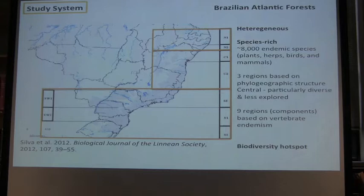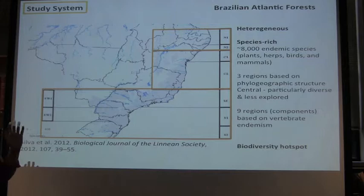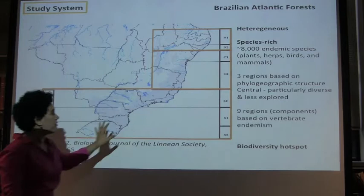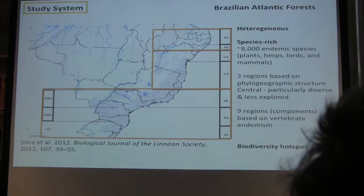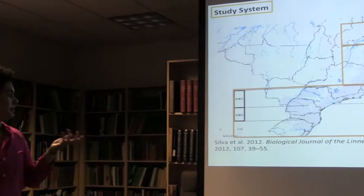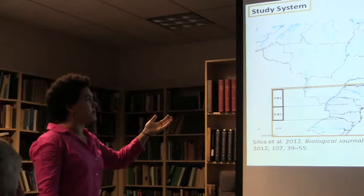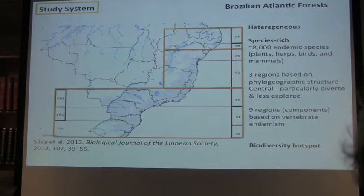It's incredibly rich — we have around 8,000 endemic species of vascular plants, herbs, birds, and mammals in this area. Based on a bunch of phylogeographic studies, we can identify at least three very distinct areas: the northern region, the central Atlantic forest, and the southern Atlantic forest. One paper subdivided those regions further and found nine distinct areas. All this biodiversity, complex patterns of endemicity, and the threats make the Atlantic forest one of the biodiversity hotspots.